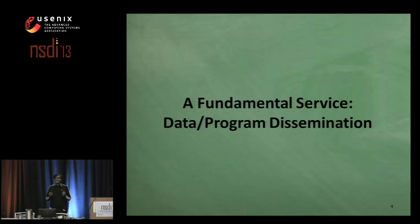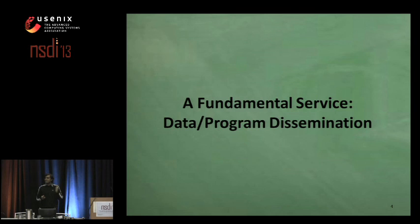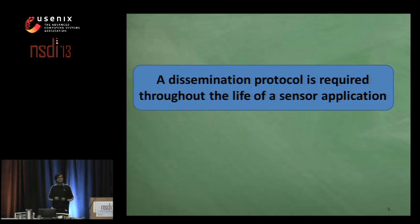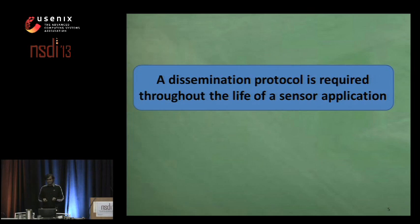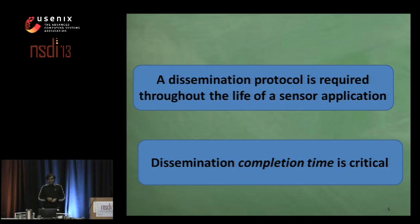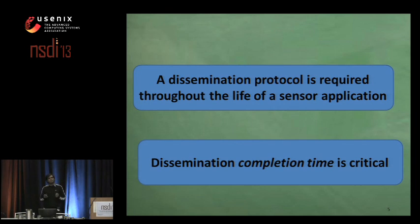Typically, the disseminated data is an executable program that is disseminated from the base station node to every other node in the network. This fundamental service is required throughout the life of a sensor application, starting from its development phase to the end of its use.